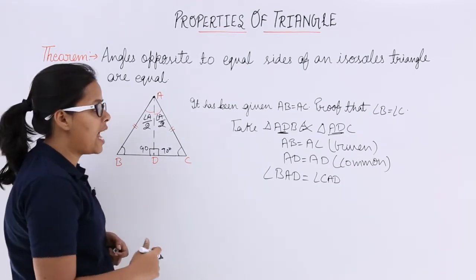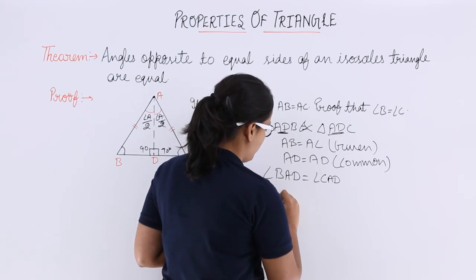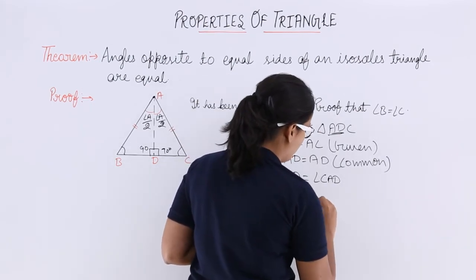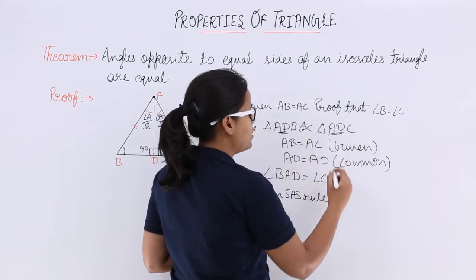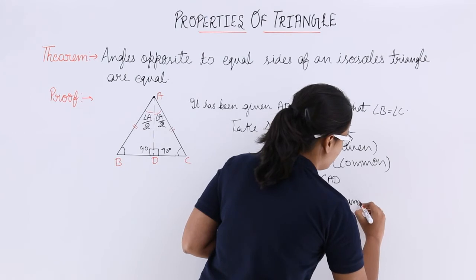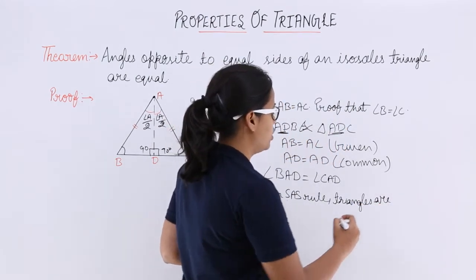You can say that from the SAS rule, side-angle-side rule, the triangles are congruent.